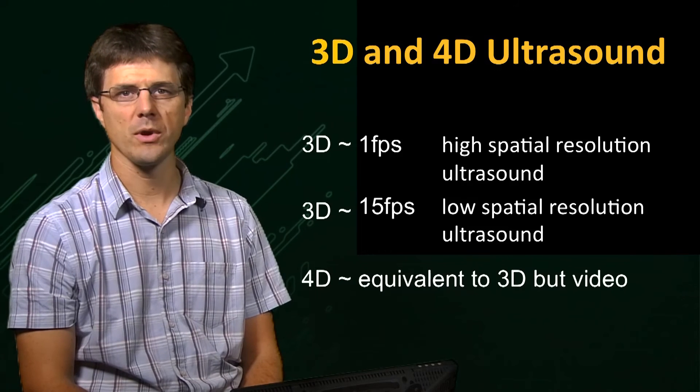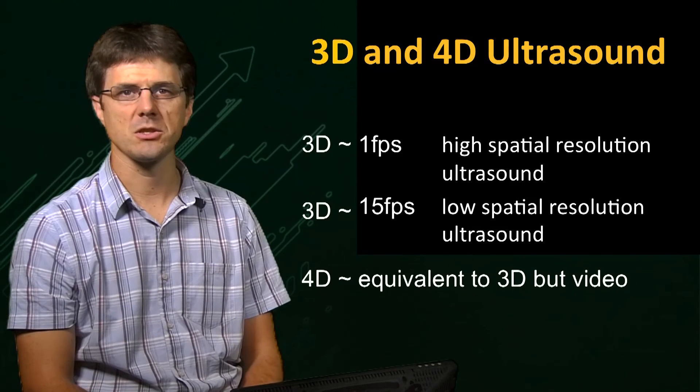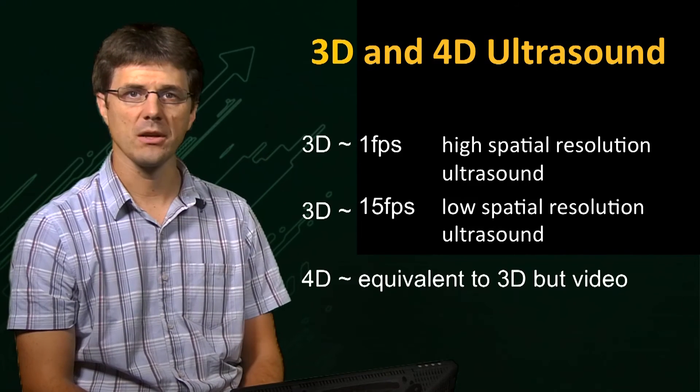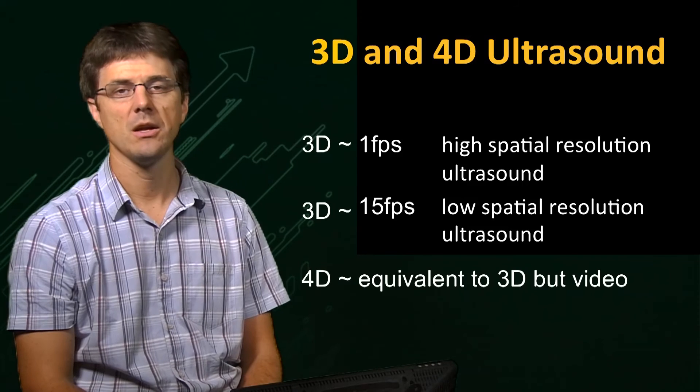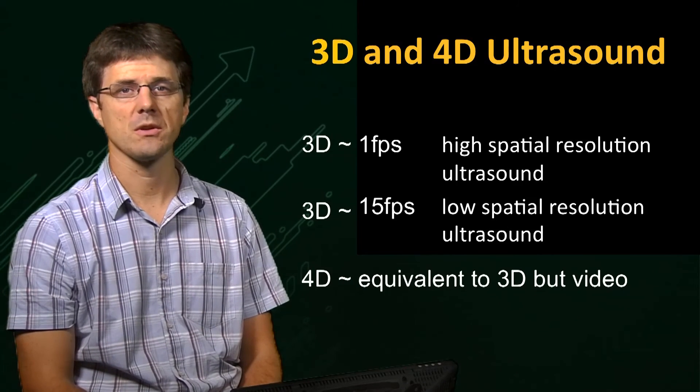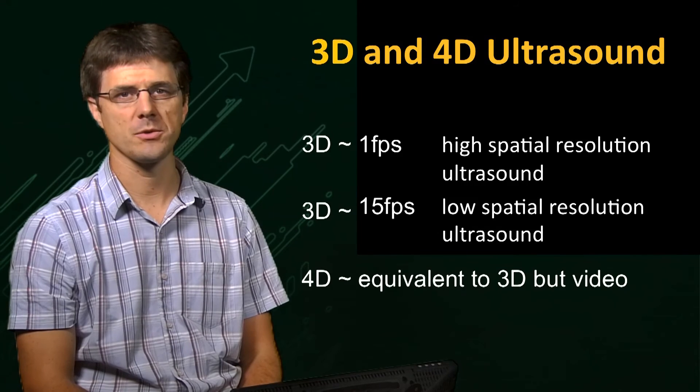Now let's have a look at 4D ultrasound, which is simply the addition of a time dimension to 3D imaging. For 4D ultrasound, the frame rate needs to be brought to approximately 10 to 15 frames per second. To speed up the acquisition, the sonographer can combine several options.